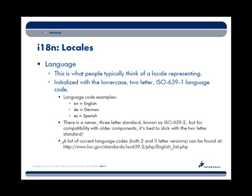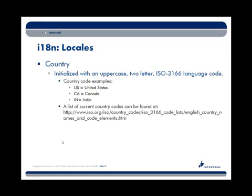The second property is a country, initialized with an uppercase two-letter ISO 3166 standard code. Examples include US for United States, CA for Canada, IN for India. On the slide I have a URL so you can look up the different country codes available. The third property — not used as frequently — is a variant. It's a way to further differentiate the region for specialized displays, and it's really an arbitrary string of your choice with no ISO standard. A variant could be a brand, or the common textbook example of differentiating between Win for Windows and Mac for Macintosh.